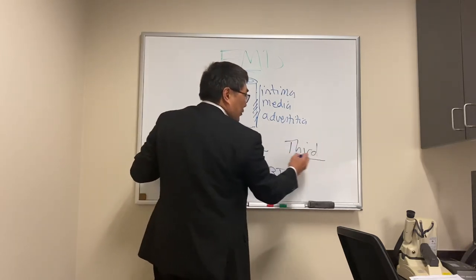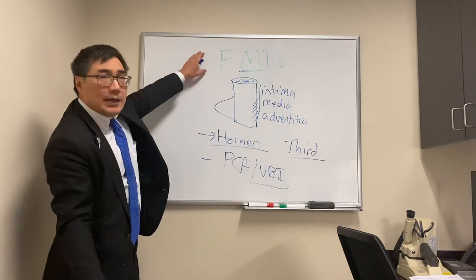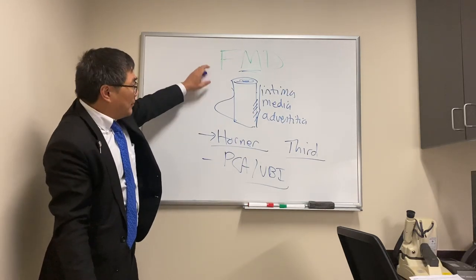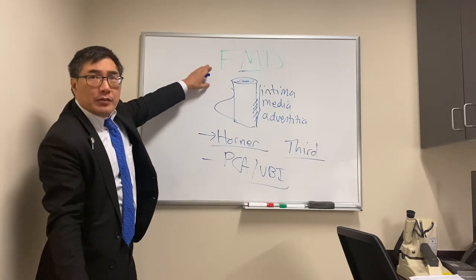So we get both pupillary findings — small pupils with Horner syndrome, but also large pupils with third nerve palsy from aneurysms — in patients with fibromuscular dysplasia.